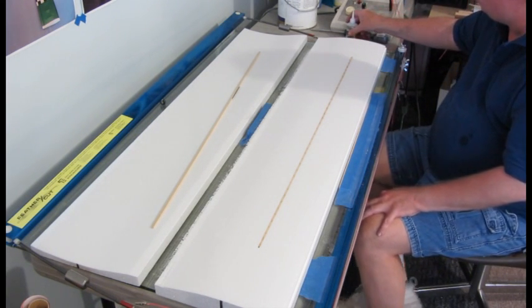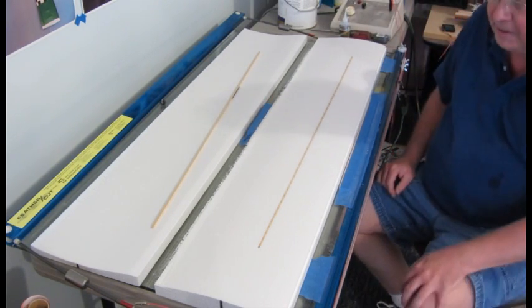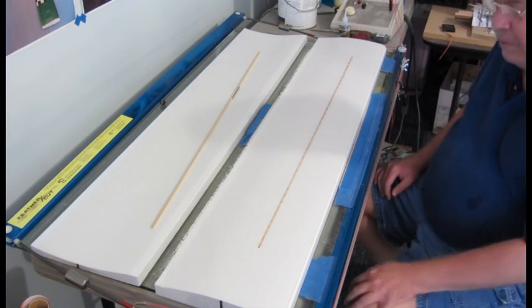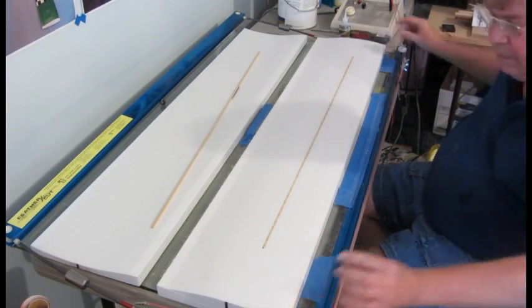And before I can flip it over, the CA has to cure. I would just repeat for the other side and then I'm ready to skin the wing. And that's how I put in my spars.